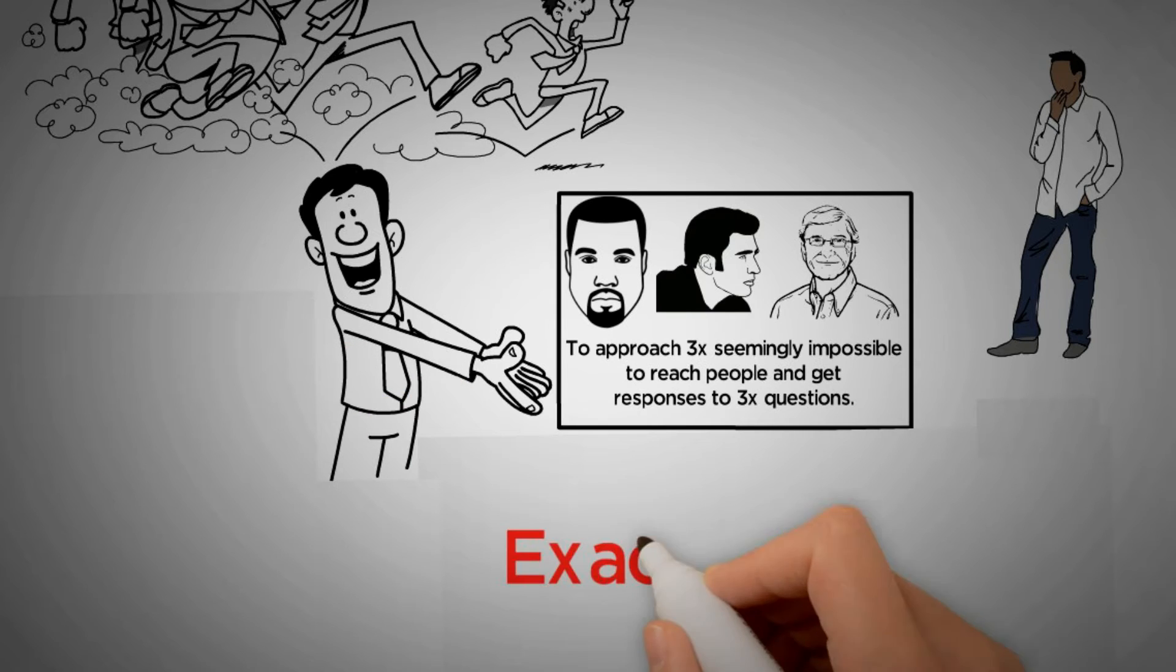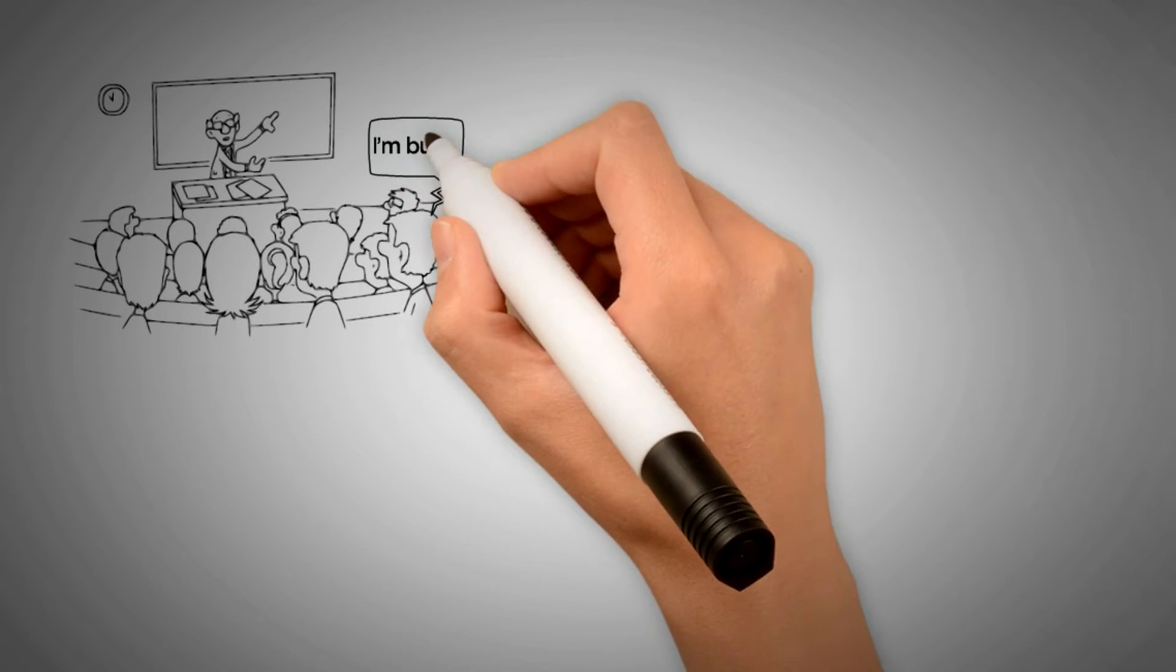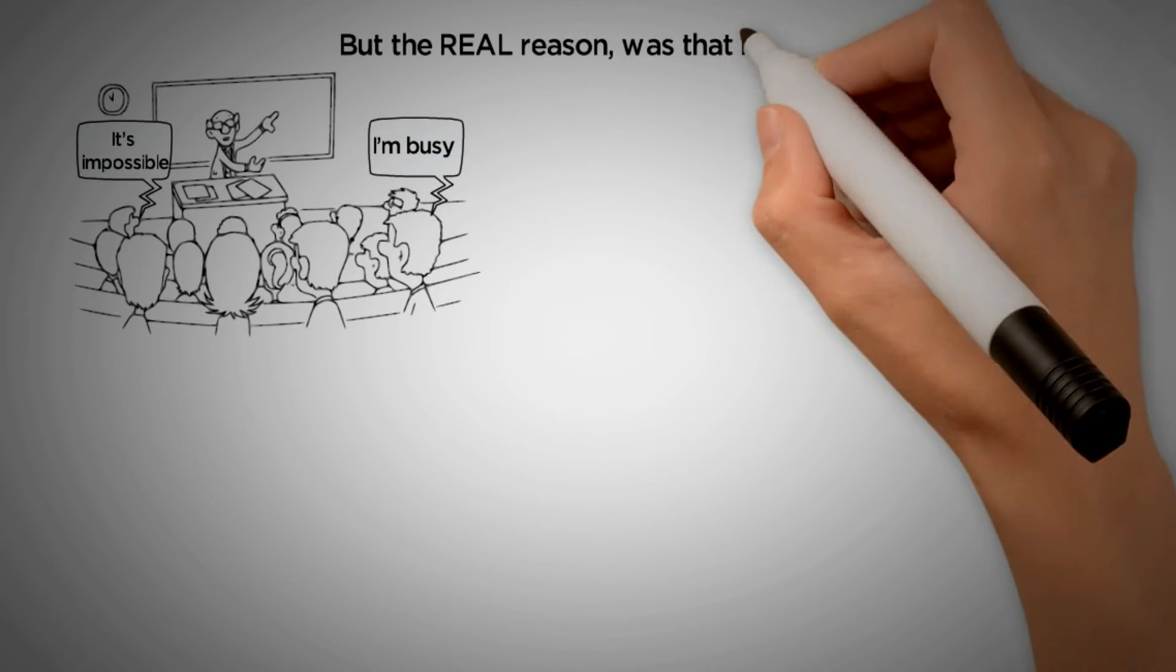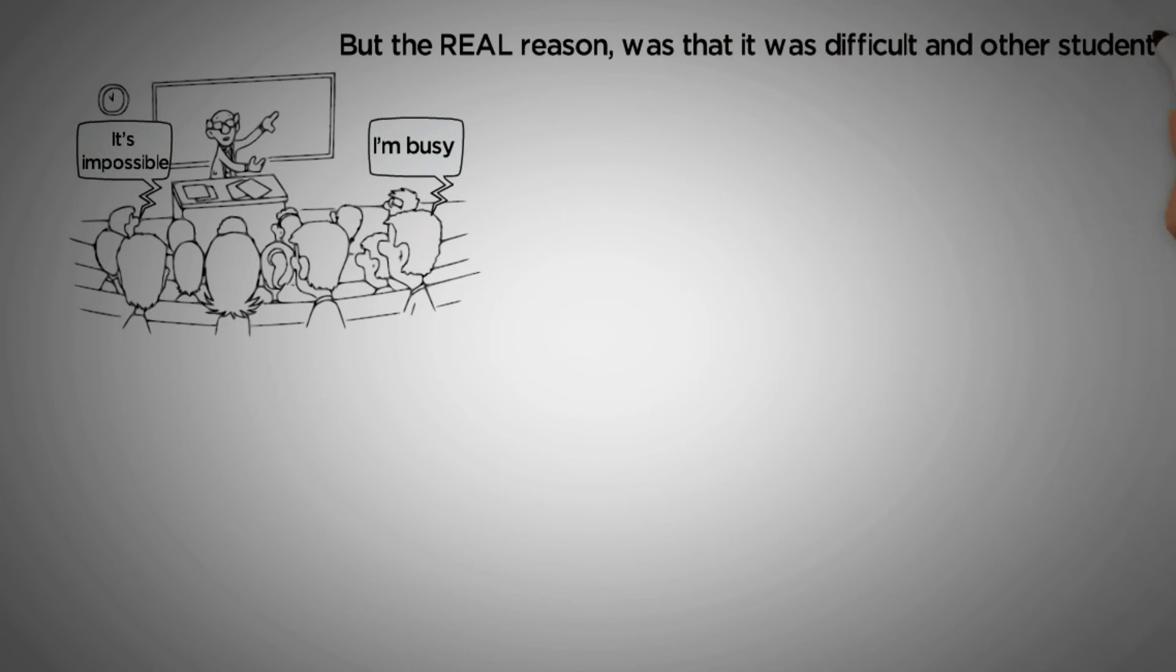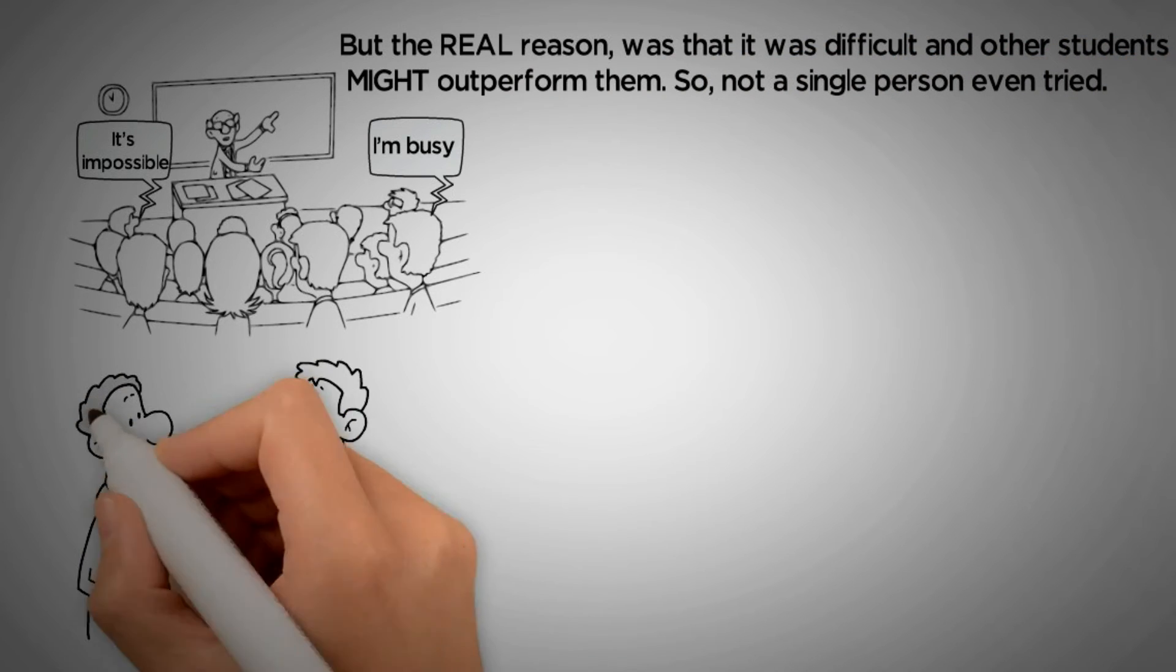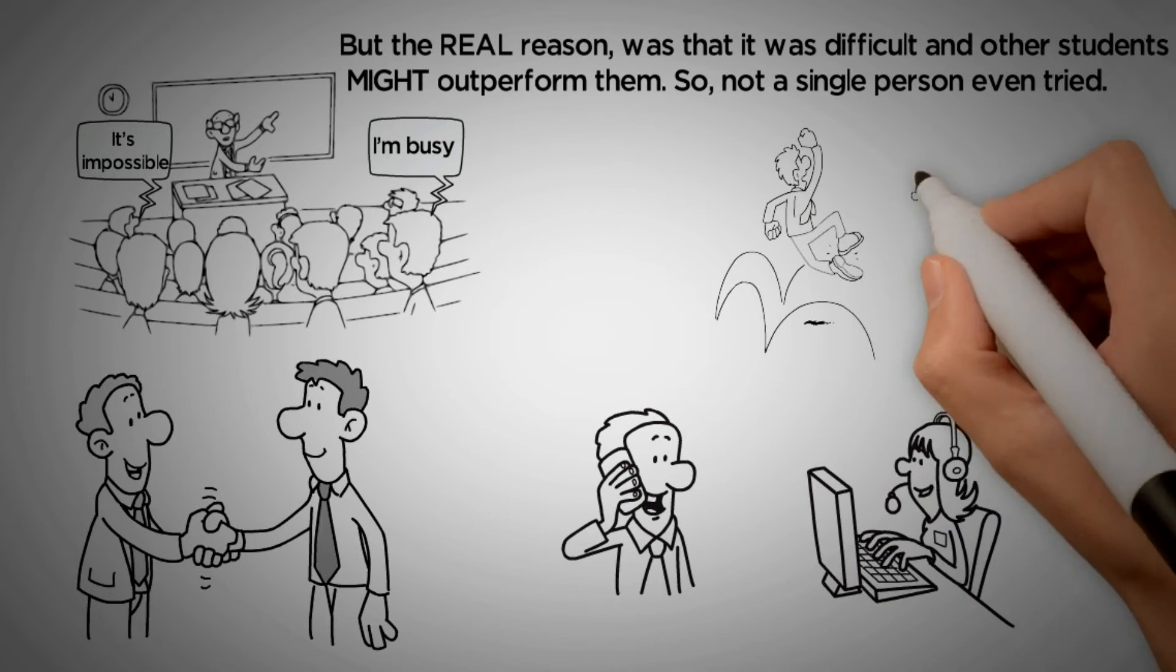How many of Tim's students do you think completed this task? Zero. Exactly zero. Tim inquired to the students who had volunteered why they had not succeeded. Explanations included 'I'm busy' or 'It's impossible.' But the real reason was that it was difficult, and other students might outperform them. So not a single person even tried. Ironically, any one person who had tried or even gotten a short response from a secretary would have won.